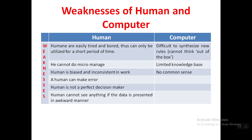Now the weaknesses of human beings: humans are easily tired and bored, and can only be utilized for a short period of time. Humans generally work eight hours per day, while computers can work 24 hours per day. Once humans become tired and bored they can't work efficiently, and they are also not good at micromanagement.